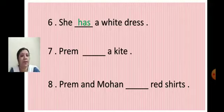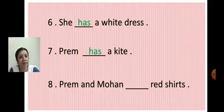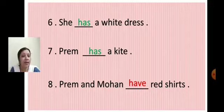Done? Next, the seventh one: Prem dash a kite. Sentence begins with a name, so we write has. Prem has a kite. H-A-S. Done? Next: Prem and Mohan dash red shirts. They are two people, so we write have. Prem and Mohan have red shirts.